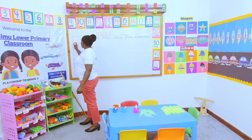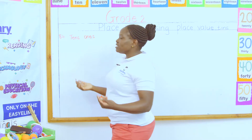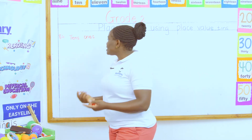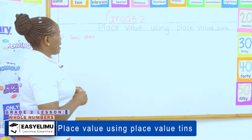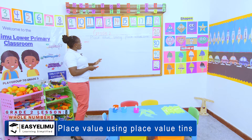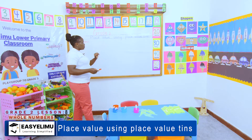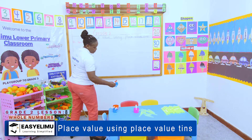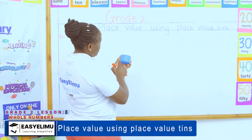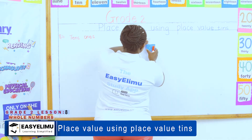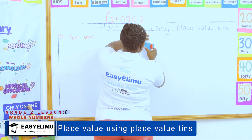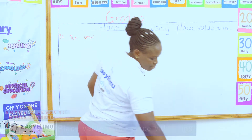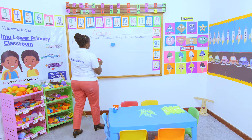What is place value? The place value is the position of a number. What is the position of number four in the number 84? What is the position of number three in the number 13? That is what it means — the position of a number. Now I have my tins here, well labeled. This one represents the ones place value and this one represents the tens place value.